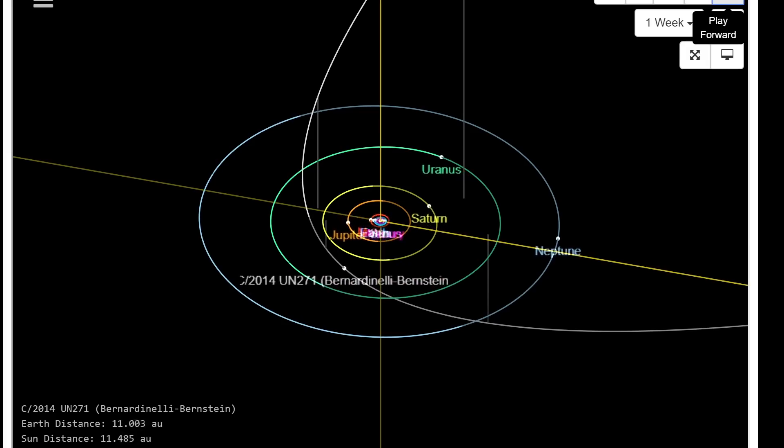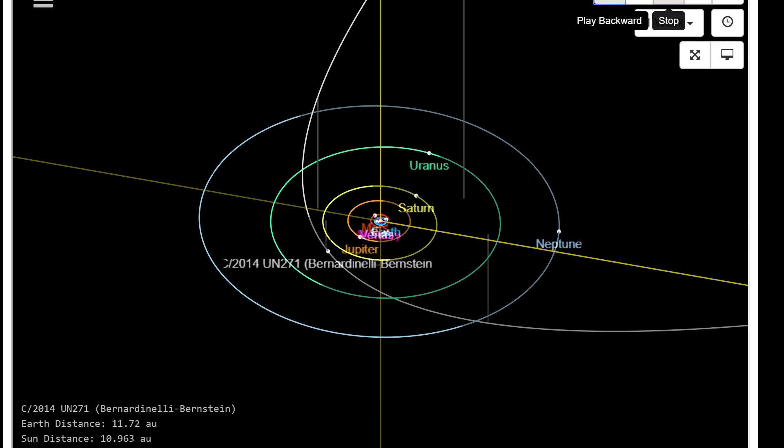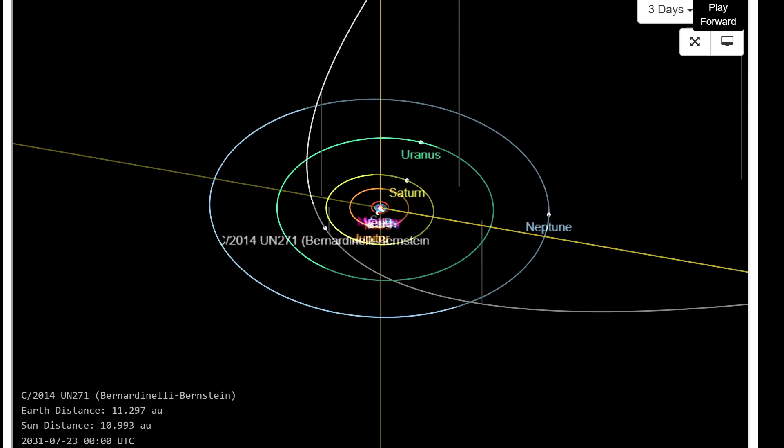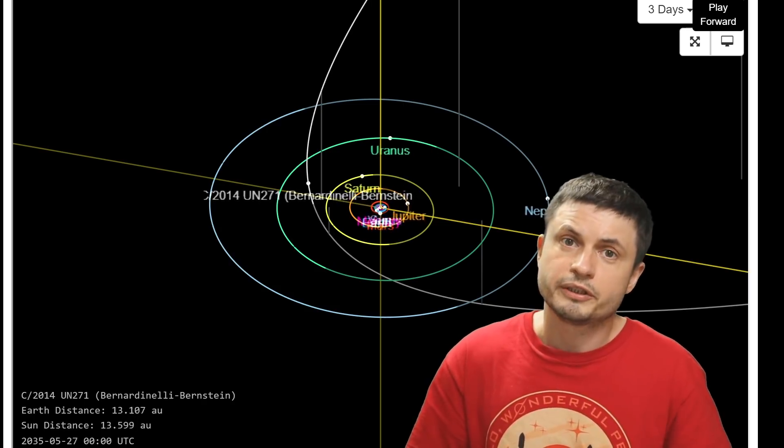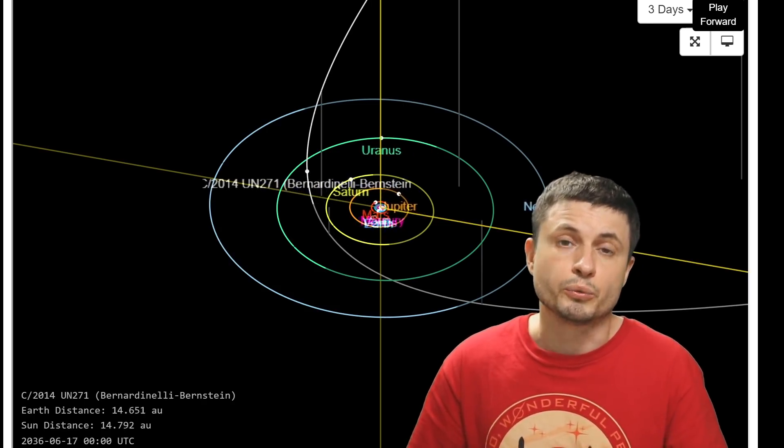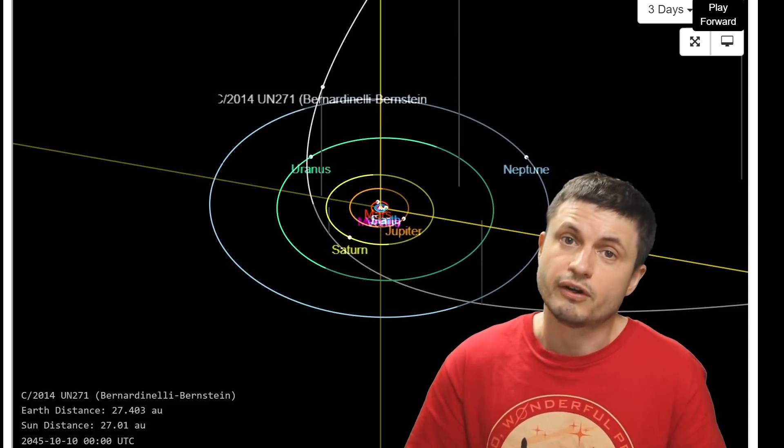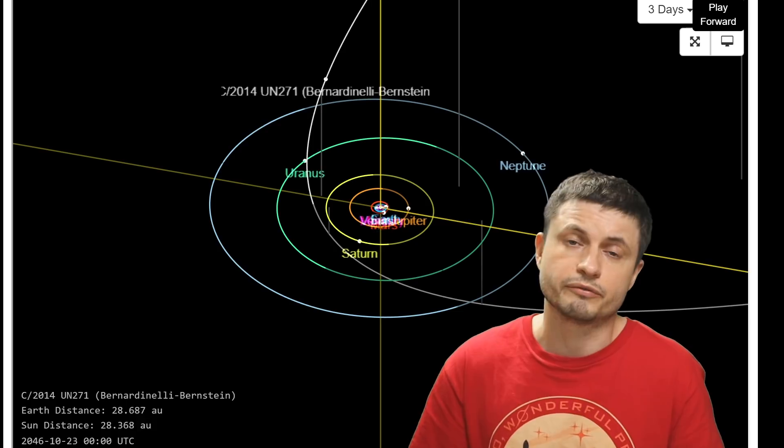And by analyzing the trajectory of this object the scientists have already worked out exactly where it's going to pass in the solar system and how long it's going to take to reach the farthest part of its orbit. With the closest approach that's going to be just past the orbit of Saturn taking place sometime in 2031. And by the way it took this object about 3 million years to reach this point. Which of course means that it spent most of its time far away from the center of the solar system and also very likely has never really been exposed to much sunlight.